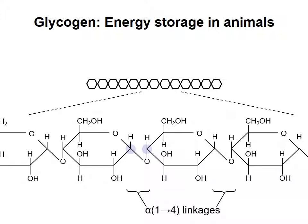In glucose, carbon-1 is the anomeric carbon. Each glucose is in the alpha configuration because the linking oxygen joined to the anomeric carbon, which would be a hydroxyl if the glucose were a monosaccharide, is on the opposite side of the ring to the highest numbered carbon of that same glucose.